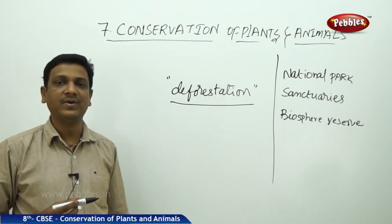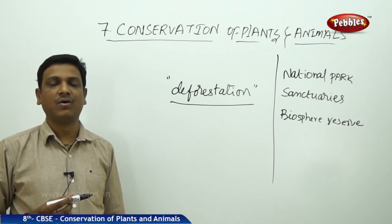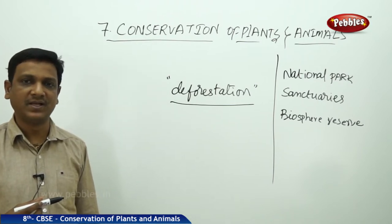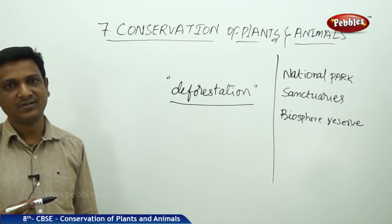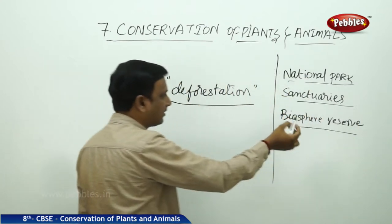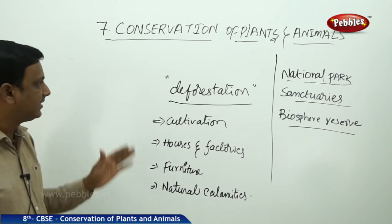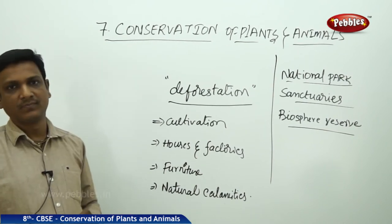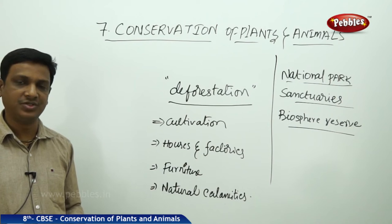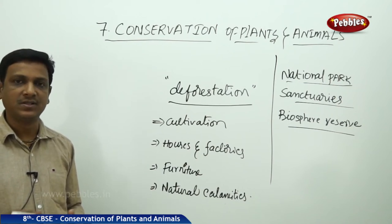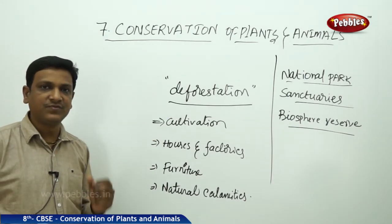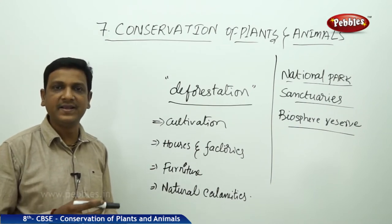As forests are depleting, many plants and animals are becoming extinct — disappearing from this planet entirely. To protect those endangered and endemic species, national parks, sanctuaries, and biosphere reserves are set up. Now let us look at the reasons for deforestation. We need more land because the population is growing and the demand for food grains is growing, so forest land is cleared for cultivation and agriculture.